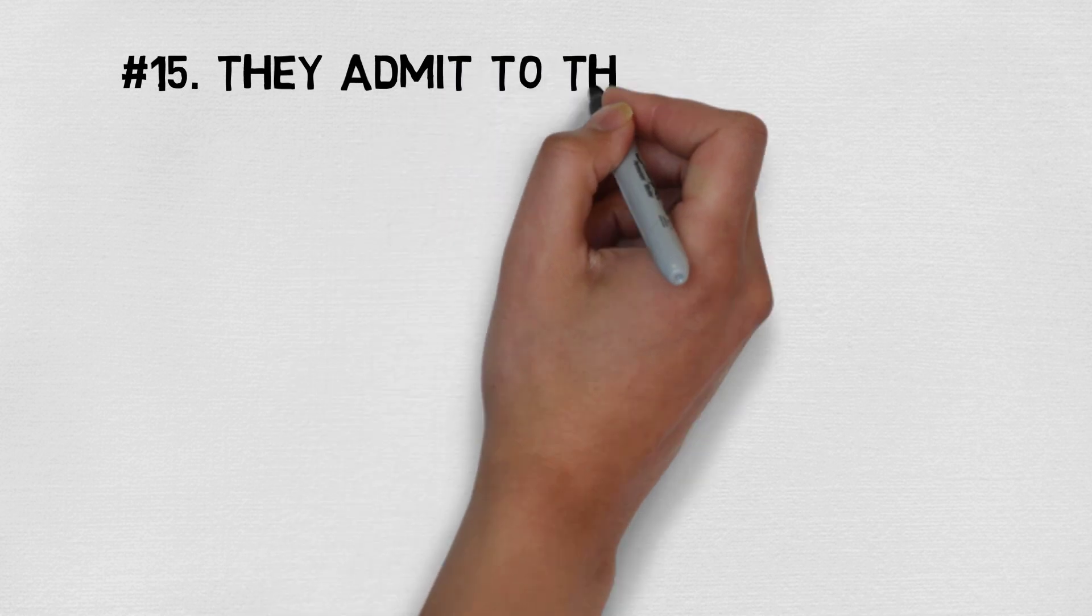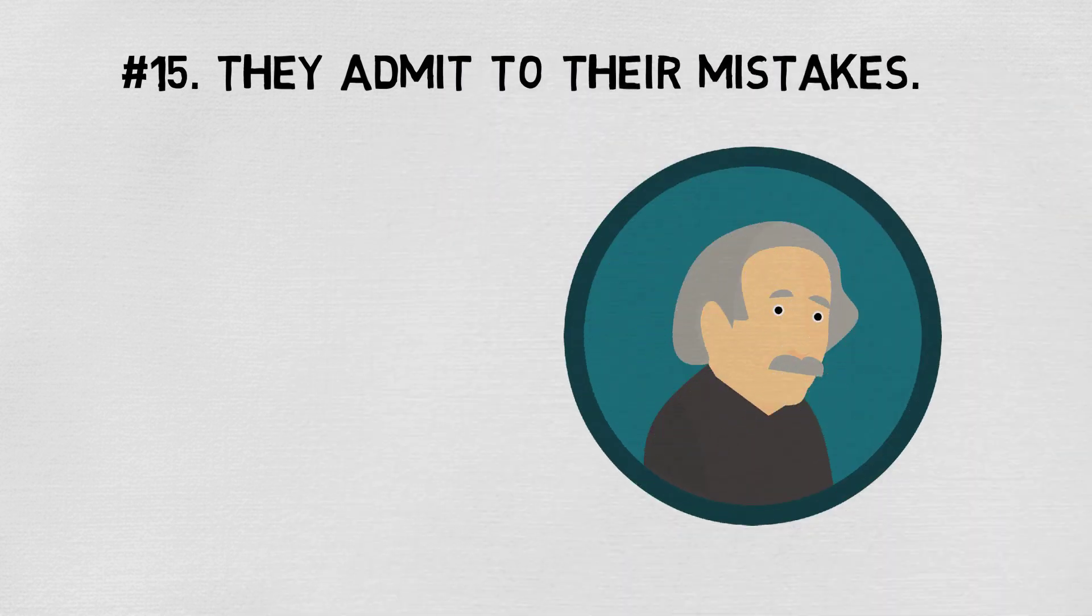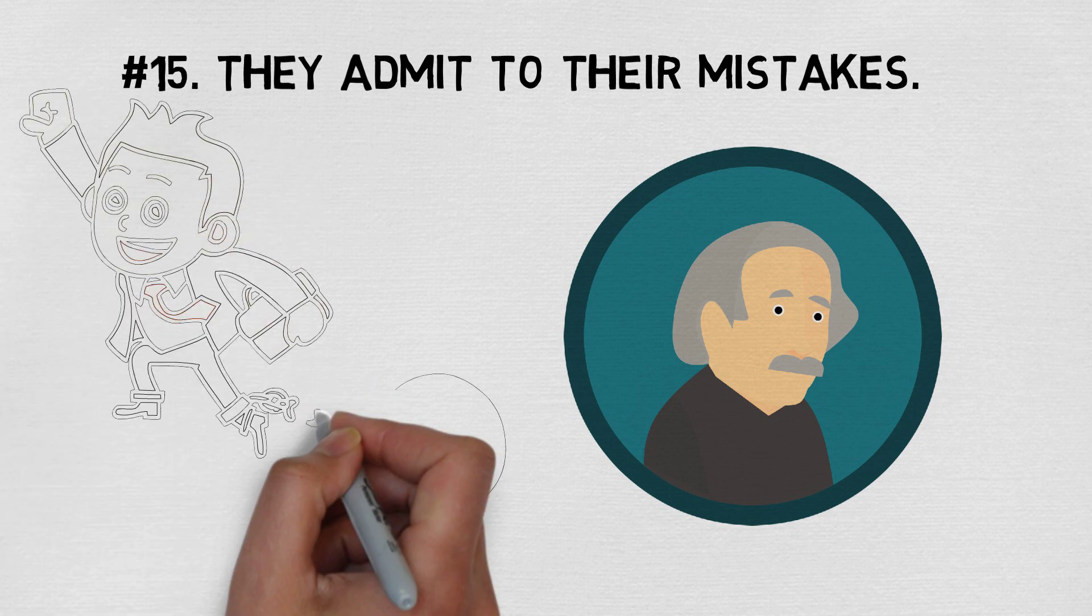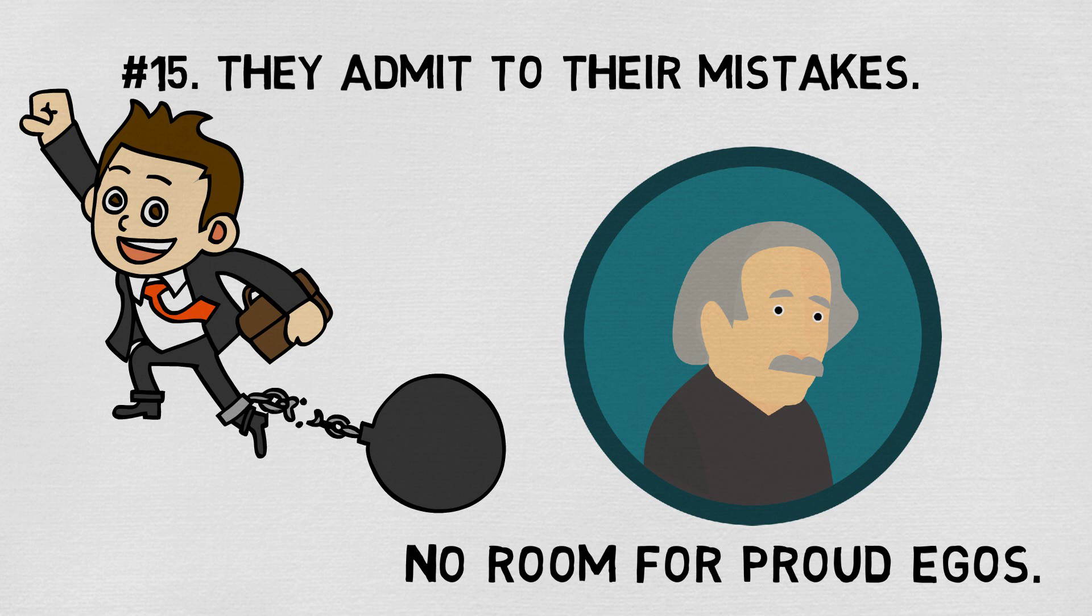Number fifteen, they admit their mistakes. Even the most intelligent person knows they aren't the only genius in the world. They will own up to their mistakes and take note of it moving forward. There is no room for proud egos.